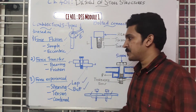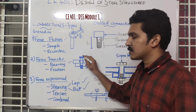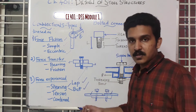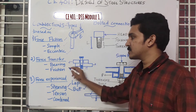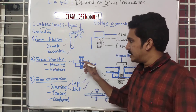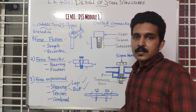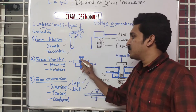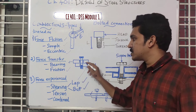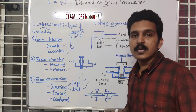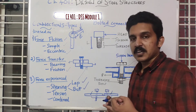Next, based on force transfer, there are two types: bearing and friction connections. In a bearing connection, if the bolt is very strong, the plate tends to crush, creating a bearing effect between the plate and the bolt. In a friction connection, the force is transferred through friction between the bolt and the plate.